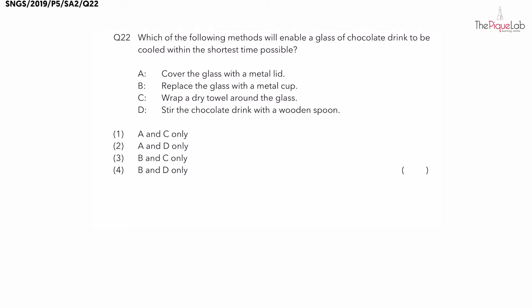Question 22. Which of the following methods will enable a glass of chocolate drink to be cooled within the shortest time possible? Let's begin by drawing a glass of hot chocolate drink. If you want that drink to cool down, should that hot drink be gaining heat or losing heat to the cooler surrounding air? That warmer drink should be losing heat to the cooler surrounding air.